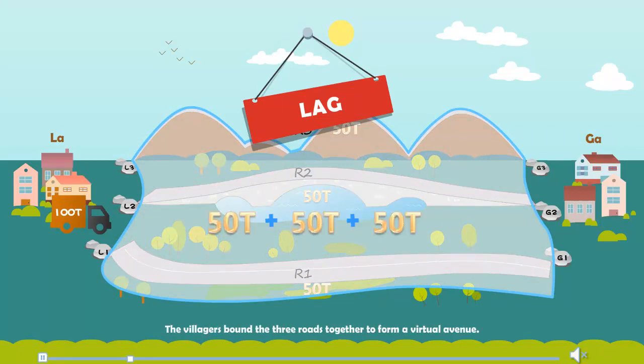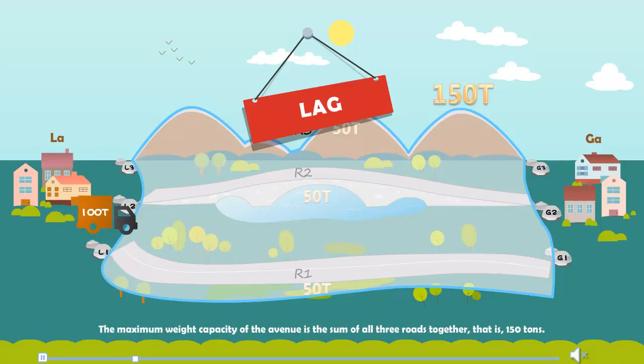The villagers bound the three roads together to form a virtual avenue. The maximum weight capacity of the avenue is the sum of all three roads together, that is, 150 tons.